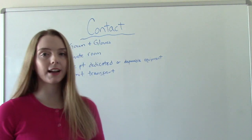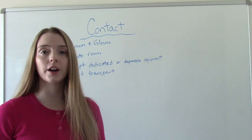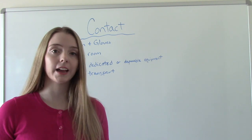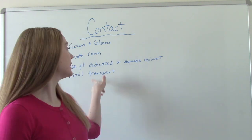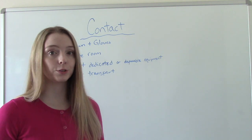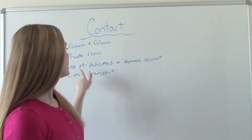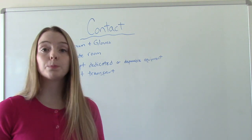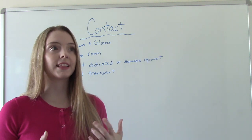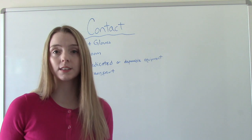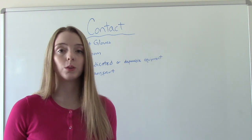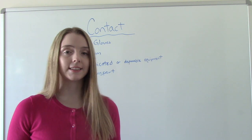If you have a patient on contact isolation, you want to wear a gown and gloves. You want to have them in a private room, so they shouldn't have a roommate. You want to limit their transportation — we don't want to take them out of that room unless we absolutely have to. And we want to use patient-dedicated or disposable equipment, like a blood pressure cuff or a stethoscope, so you don't spread those germs.